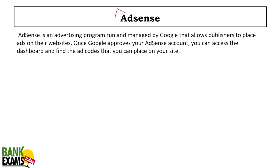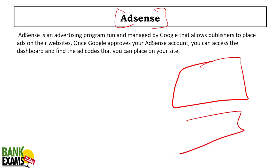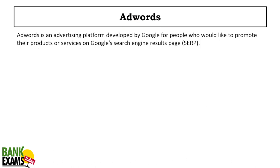AdSense: on many websites you see relevant advertisements on the side. Publishers get paid for those ads, advertisers pay for them, and Google takes a cut — generally 30%. AdSense is a Google product.